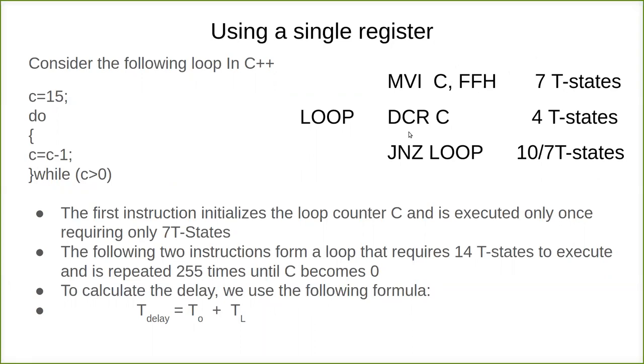JNZ is jump on no zero. When decrement is executed, it's an arithmetic operation. On doing the decrement, if the register value is equal to zero, then the zero bit will be set. In the flag register we have the zero bit, and that bit will be set to one.